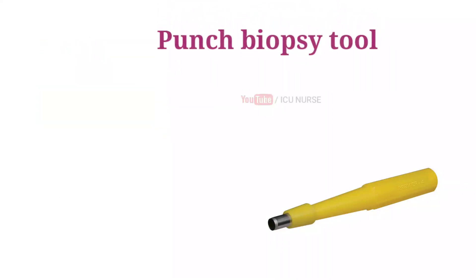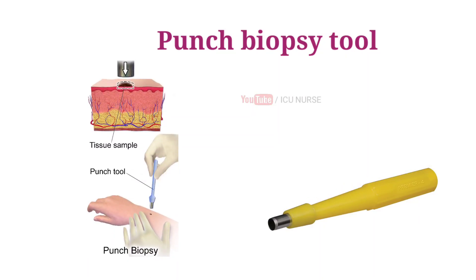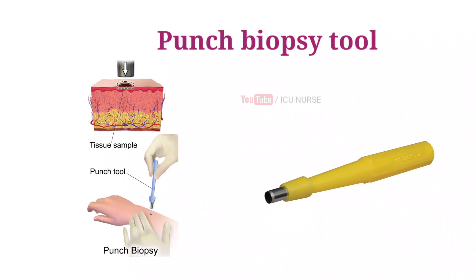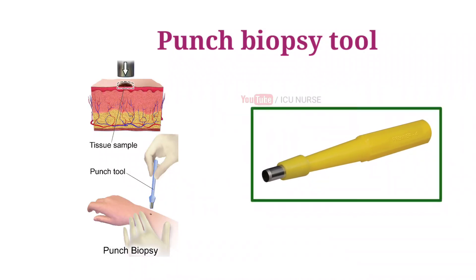A punch biopsy tool is used in punch biopsy, a procedure in which a small round piece of tissue about the size of a pencil eraser is removed using a sharp hollow circular instrument. The tissue is then checked under a microscope for signs of disease. A punch biopsy may be used to check for certain types of cancer including skin, vulvar, and cervical cancer, as well as certain skin conditions that may lead to cancer.